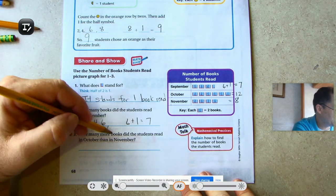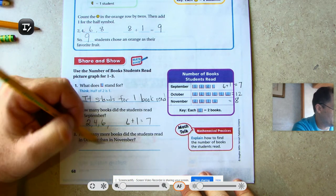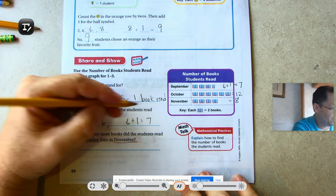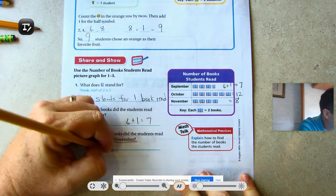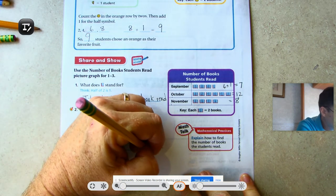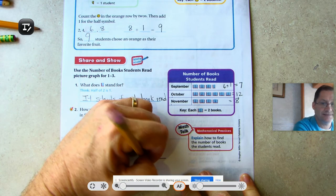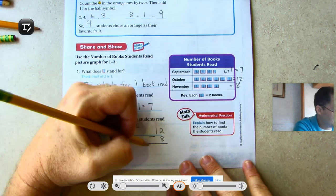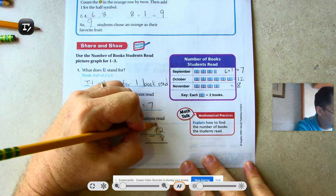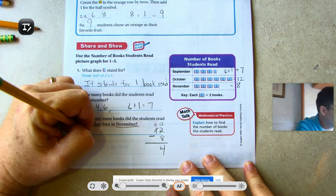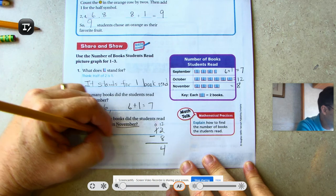How many more books did the students read in October than in November? October 12, November 8, and four more books.